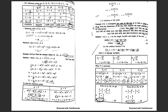For the stationary points, set F_x = 0, F_y = 0, and F_z = 0. Differentiating F with respect to x gives y + 2z + λyz = 0, which we rearrange to express in terms of -λ. This gives equation (1).